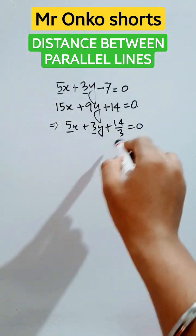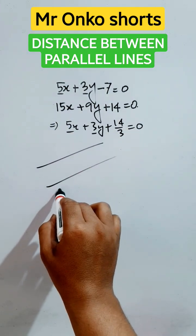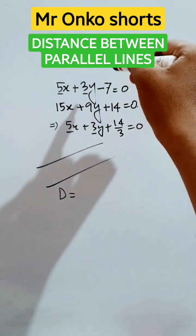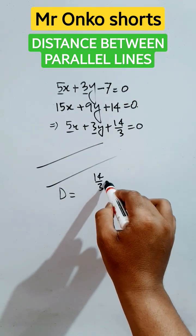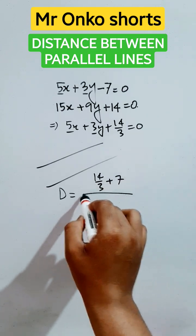So the distance formula between two parallel lines will be D equals the distance between the two constants, that is 14 by 3 minus minus 7, that is plus 7, divided by